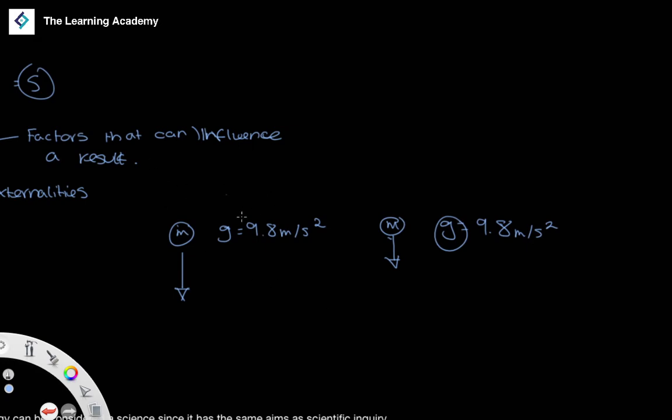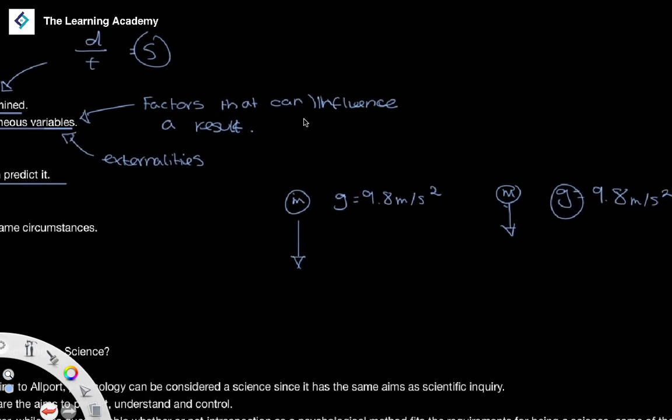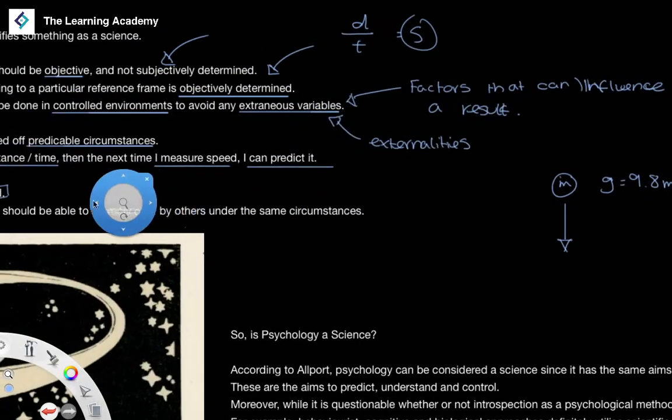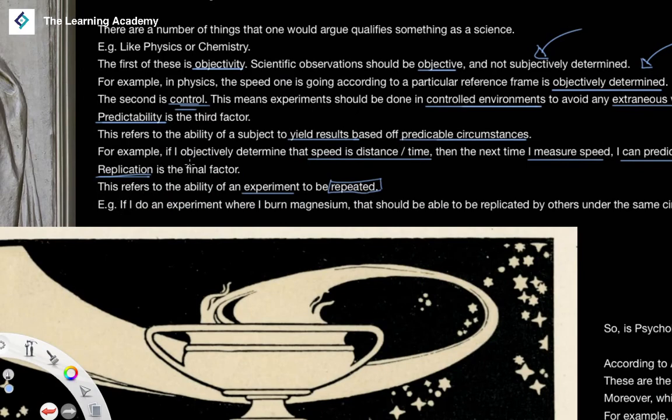The exact same thing we can say happens within chemistry. If we do a particular chemical experiment, we can predict what the results are going to be. We do the experiment under controlled conditions, so there are no externalities, no extraneous variables, and we can show the results of this experiment. Then if we want to show this to be the case, we can replicate it by doing it again and yielding the same results. This is how we would say the experiment ought to be repeated.